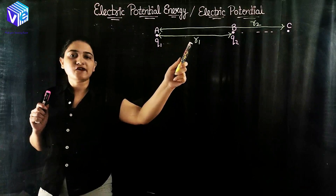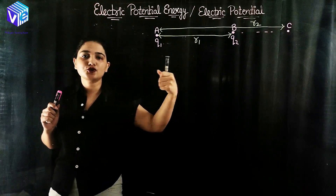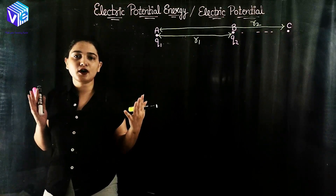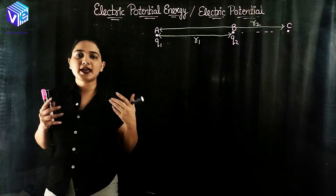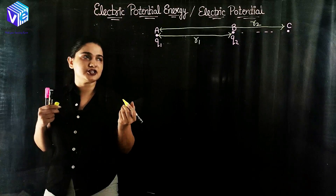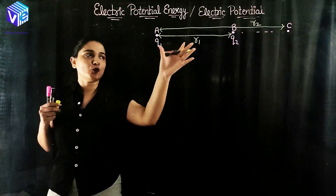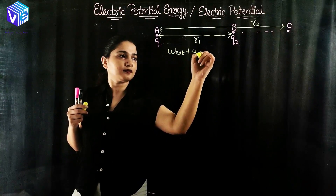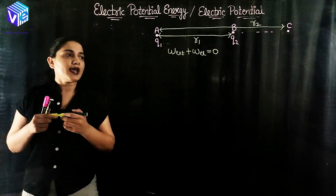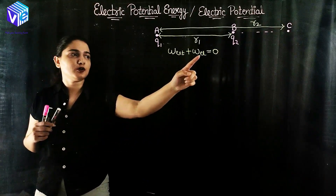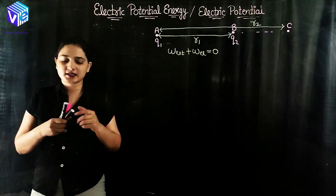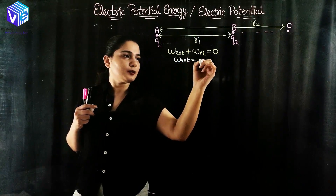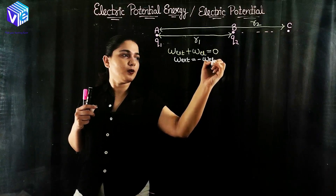There is some electric force and there is some external force to move the charge. According to the electric force we'll have the electric work done, and the external force is making some external work done on these charges. The external work done plus the electric work done is equal to zero. So the external work done is equal to the negative of electric work done.